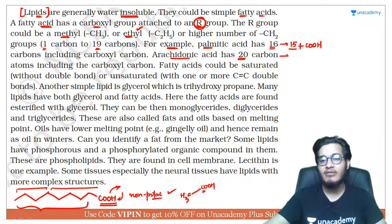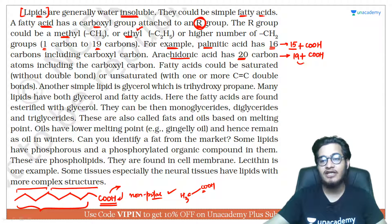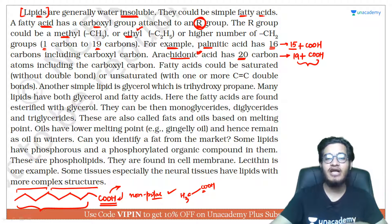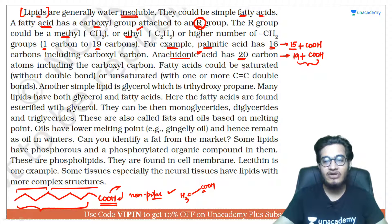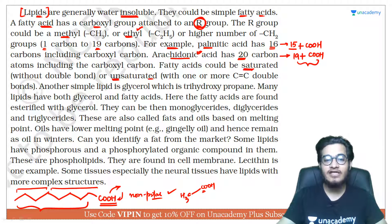Arachidonic acid 20 carbon का होता है — 19 carbon की chain और यहाँ पर COOH group अलग से present रहता है। Saturated मतलब कोई double bond या triple bond नहीं है; unsaturated का मतलब double bonds देखने को मिल सकते हैं।